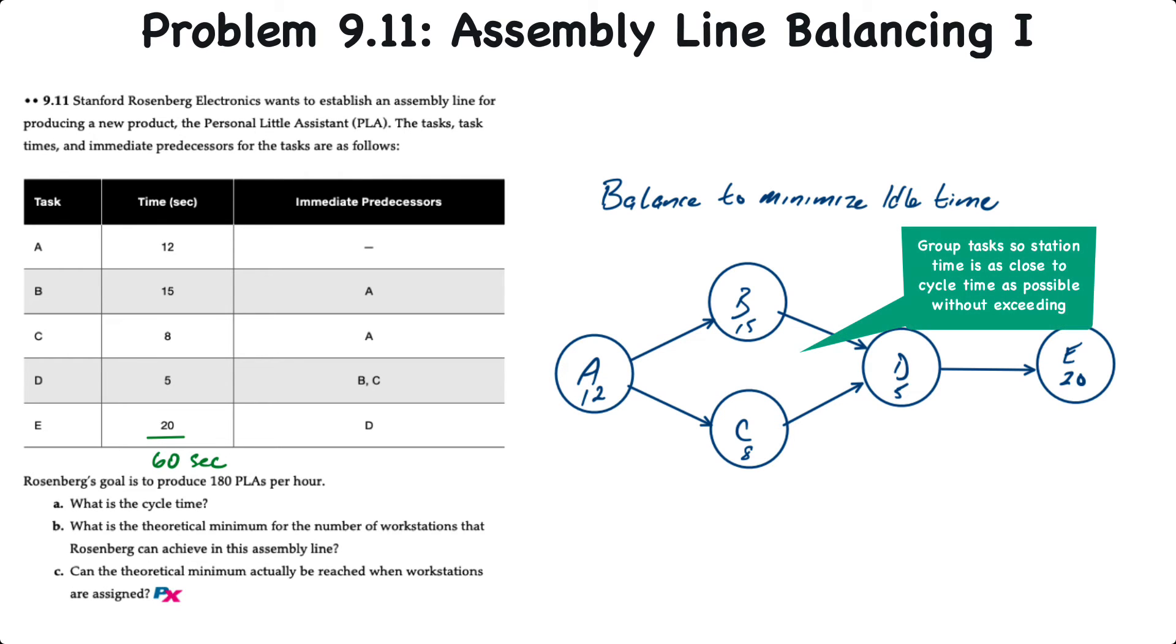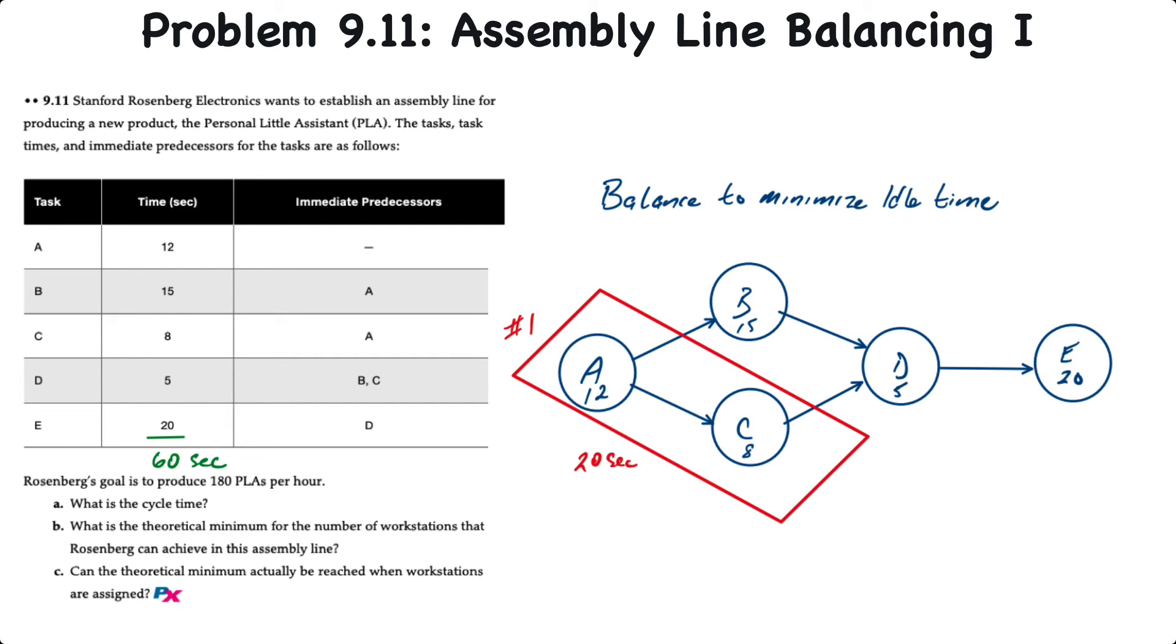Now in order to balance the line, what we want to do is group these tasks in such a way so that their times are as close as possible, but without exceeding the cycle time. So if we look at the diagram, right off the bat we can see that A at 12 seconds and C at 8 seconds add up to 20 seconds. And because that's equal to the cycle time, there is no idle time. This workstation is fully utilized. And because they're in close proximity, it would make sense to group those two tasks into a workstation. So that's what we'll do. We'll make those workstation 1.